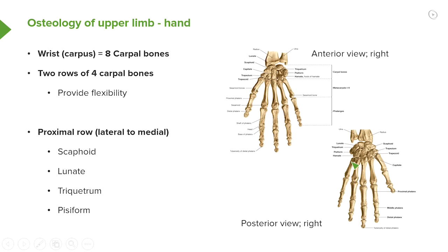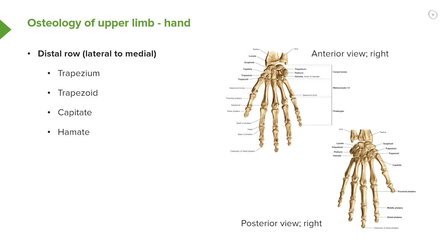These four bones make up the proximal row. We also have a distal row, and these are formed by the trapezium, trapezoid, capitate, and hamate. Again, we can see them from lateral to medial: trapezium, trapezoid, capitate, and then the hamate, with the hook of the hamate as a prominent feature. We can see this on the anterior aspect — trapezium, trapezoid, capitate, and hamate.